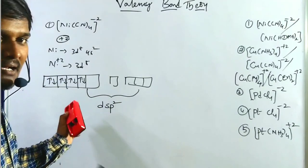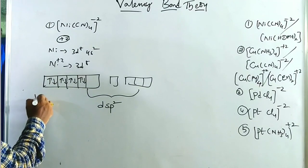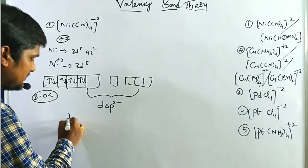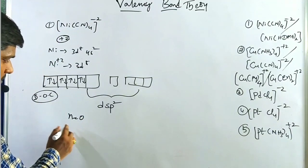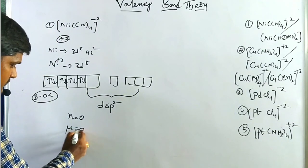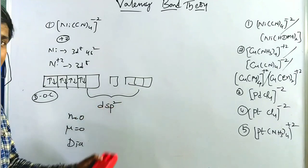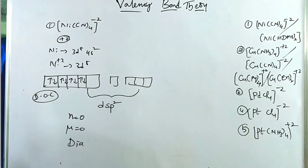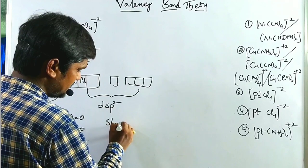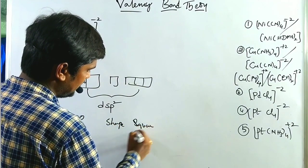In dsp² hybridization, there are no unpaired electrons, so n = 0, μ = 0 — diamagnetic. Using the hybridization prediction table, dsp² gives a square planar shape. This is a square planar inner orbital complex.